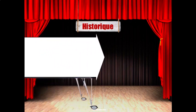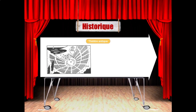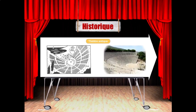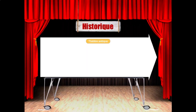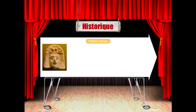Voyons plus en détail le théâtre antique. C'est un théâtre qui émerge environ cinq siècles avant Jésus-Christ. Un théâtre extérieur pouvant accueillir des milliers de spectateurs. Un jeu masqué et essentiellement chanté. Et dont les règles que nous avons vues précédemment font partie intégrante de ce théâtre : la règle des trois unités — un lieu, un temps, une action — mais également et surtout la bienséance.